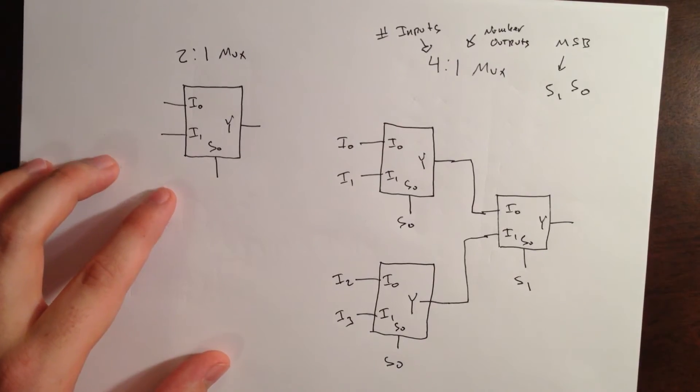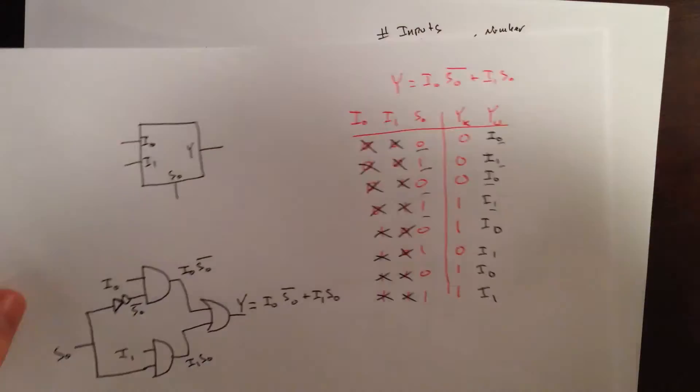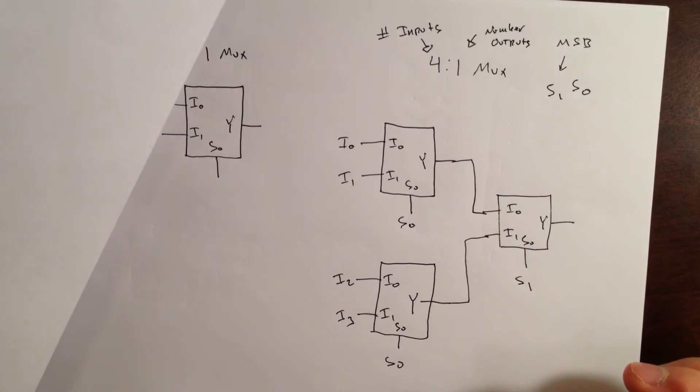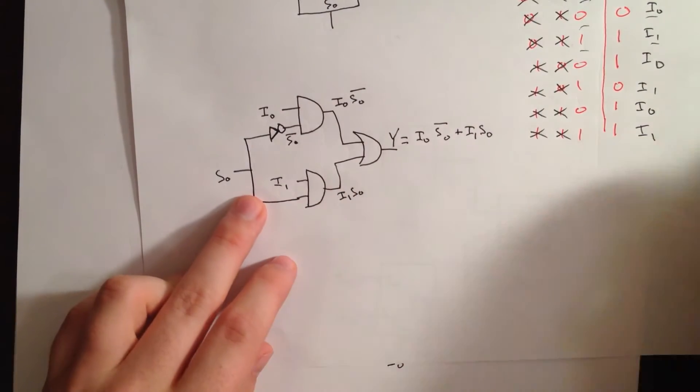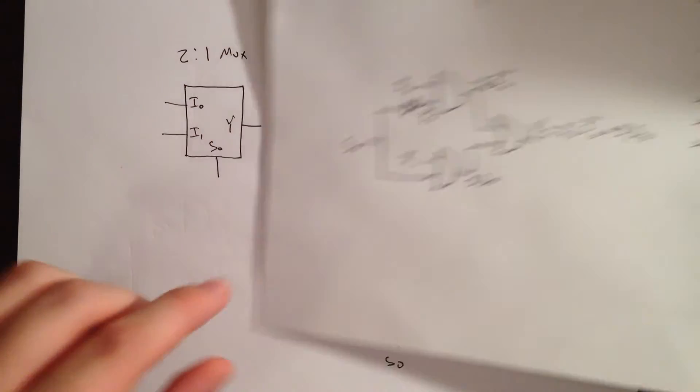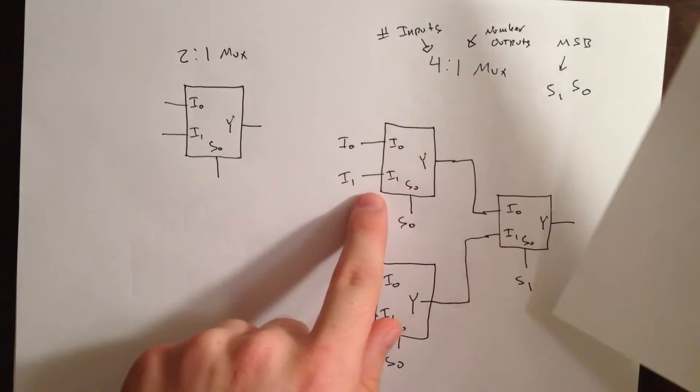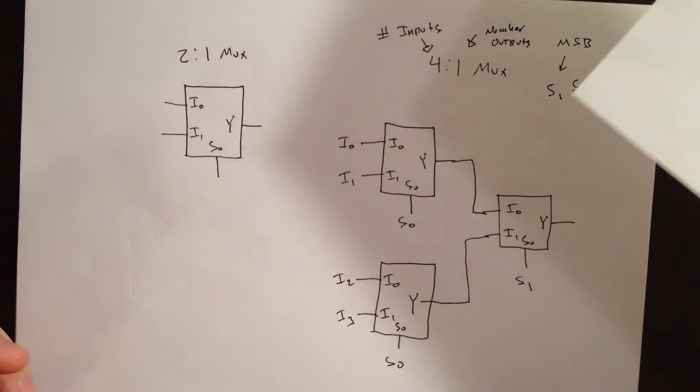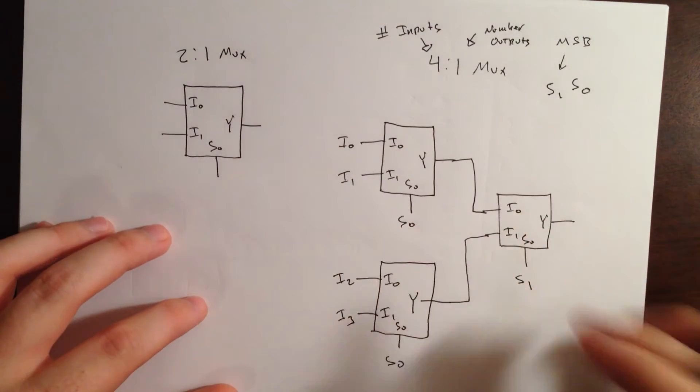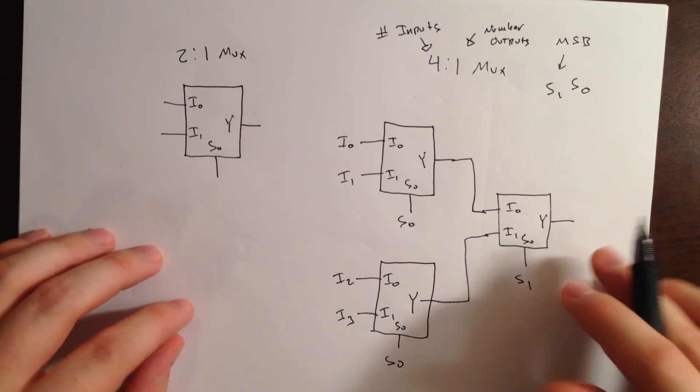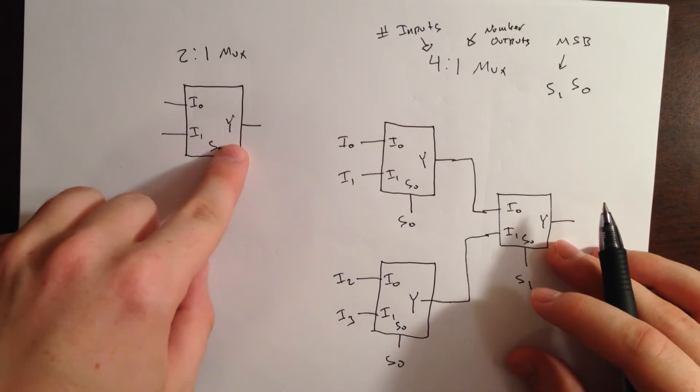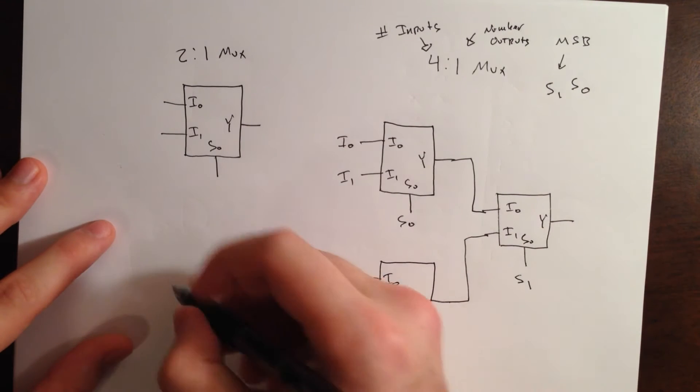And, you may recall from our last video that the circuit within the 2:1 multiplexor looks something like this. So, each 2:1 multiplexor will have this circuit within it. We can pretty much build this circuit three different times, and then we'll have our multiplexor. But, that's a lot of work, and this is just a shorter way of doing that. And, we can draw out a 4:1 multiplexor, kind of like we did with our 2:1 multiplexor.